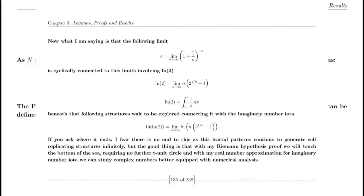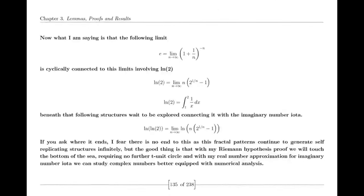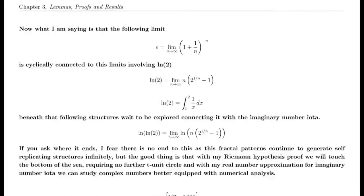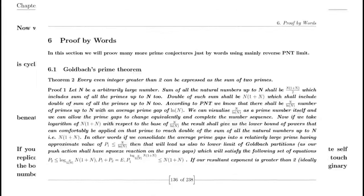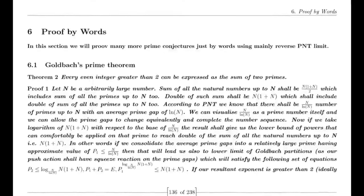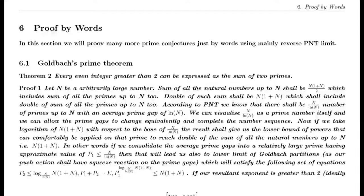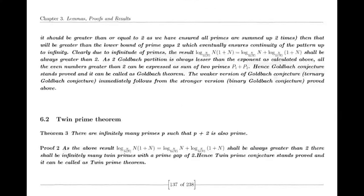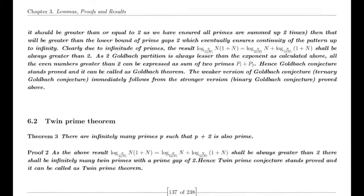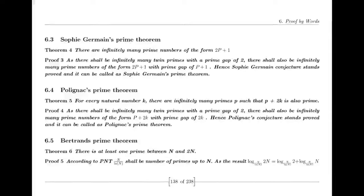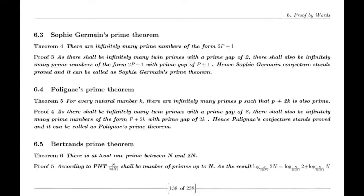Suraj boldly asserted that these cyclic numbers were intimately tied to constants such as the speed of light, Planck's constant, Boltzmann constant, Charles constant, and even the mass of an electron. He argued that the inherent symmetry and cyclic nature of these mathematical constructs could mirror the fundamental principles governing the physical universe. The connections he proposed seemed to resonate with the harmony of nature itself, suggesting a deeper underlying unity between mathematics and the physical world.